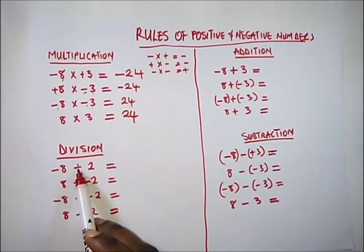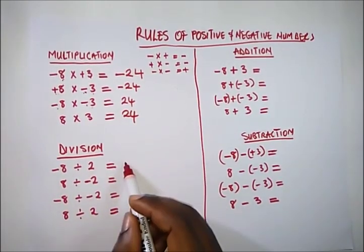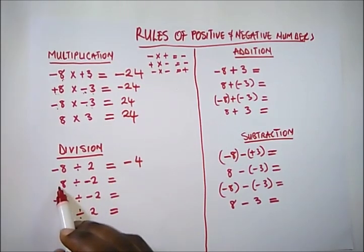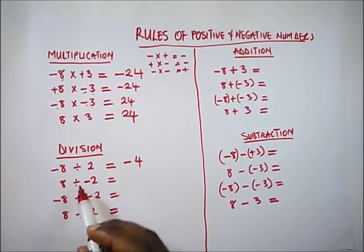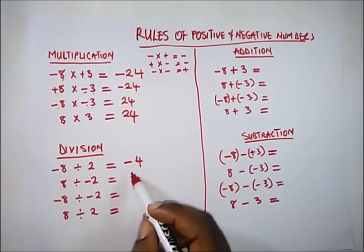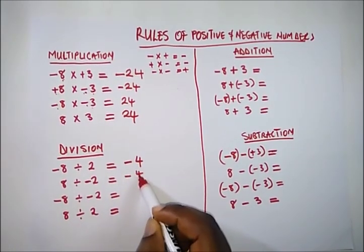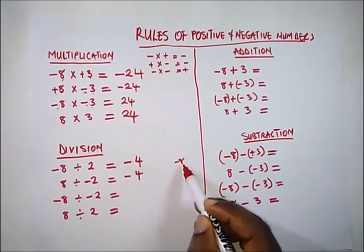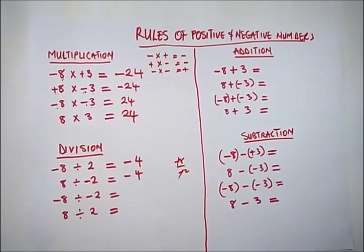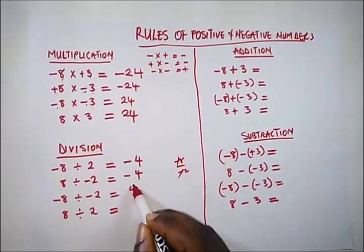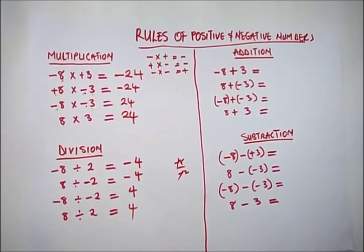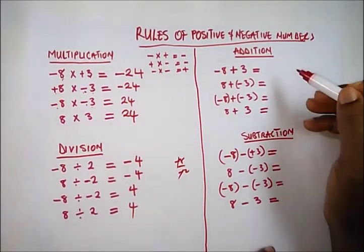Division is almost the same as multiplication — it follows the same sign rules. A minus divided by a minus gives a positive: for example, minus 8 divided by minus 2 gives positive 4. A positive divided by a negative gives a minus: 8 divided by minus 2 gives minus 4. And a positive divided by a positive gives simply positive 4.